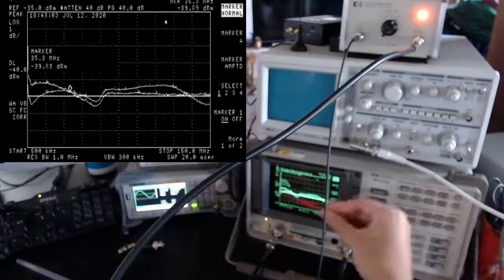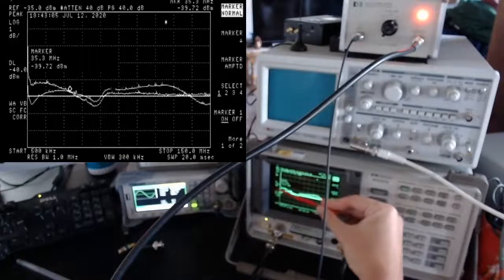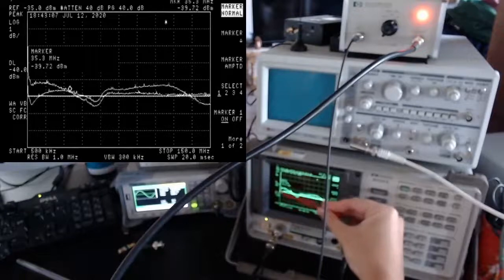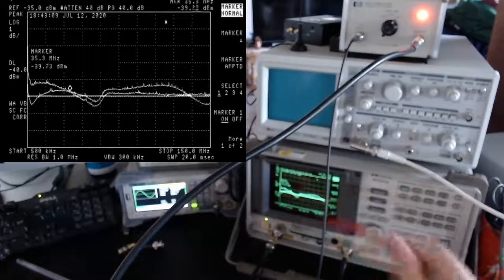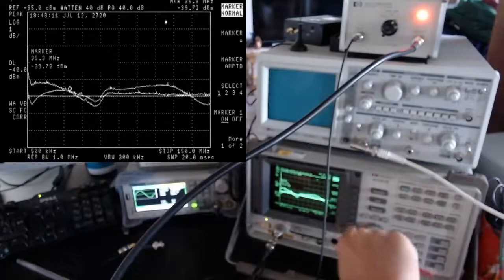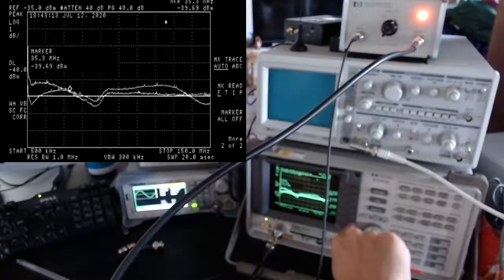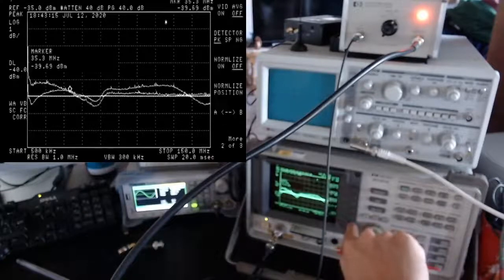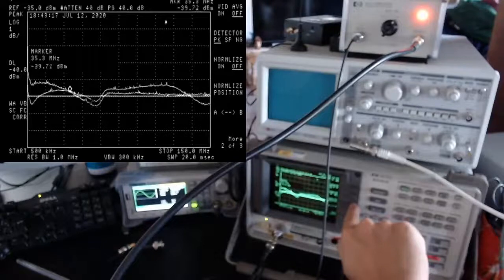Instead here at low frequencies, for example, as you can see, the amplifier is losing about 1 dB. And I can easily see this using the normalization functionality of the spectrum analyzer.